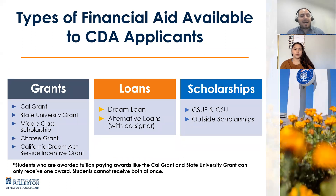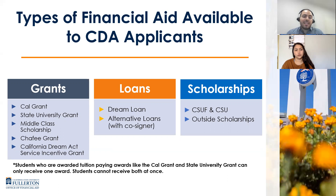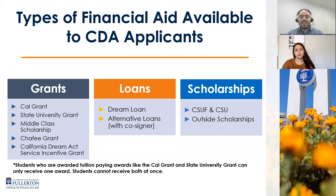We also want to highlight the different forms of financial aid available to California Dream Act students. If you are a CDA applicant, these are the forms of financial aid you could potentially qualify for. Under grants, we're able to offer CDA applicants state grant funding like the Cal Grant, State University Grant, and Middle Class Scholarship, among others listed, as well as loans like the Dream Loan, and potentially even alternative loans. We also encourage CDA students to apply for scholarships, whether through the CSU, CSUF, or local and outside scholarship opportunities. For more detailed information on any of these, visit our website — you'll find great information about each grant, scholarship, or loan opportunity.